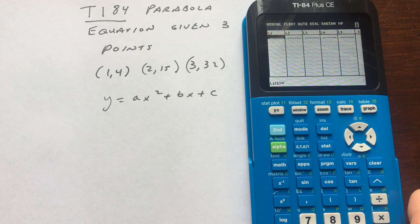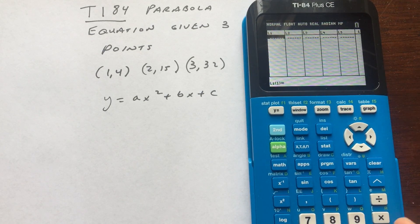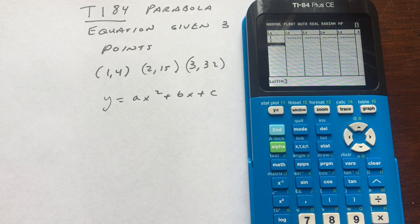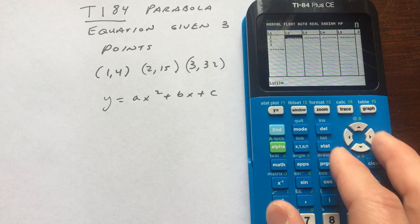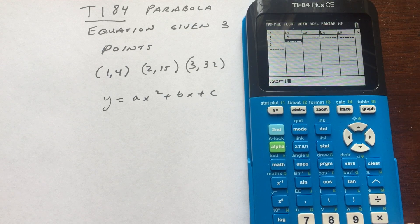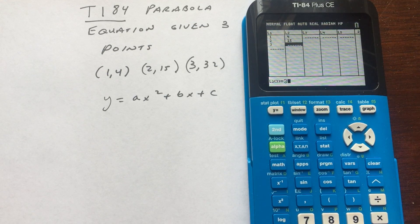And then List 1 and List 2. Now in List 1, you want to enter the X coordinates of the points. So I'm going to enter 1, 2, and 3. I'm just pressing the Enter key. And then if you go over to List 2, I'm going to enter the corresponding Y coordinates. So that's 4, 15, and 32.